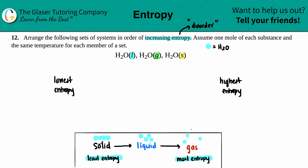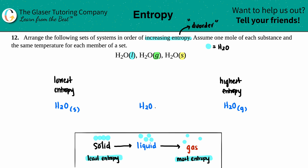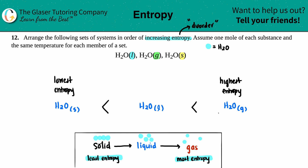So H₂O solid, since they're all tightly packed, has the lowest entropy. H₂O gas — steam — has the highest entropy, and H₂O liquid is in the middle. Using less-than signs, the alligator chomps at the higher value: H₂O solid has less entropy than H₂O liquid, which has less entropy than H₂O gas. That's our final answer.